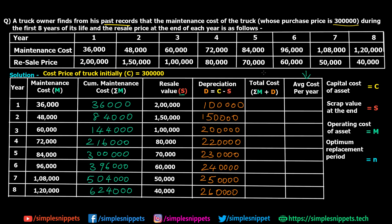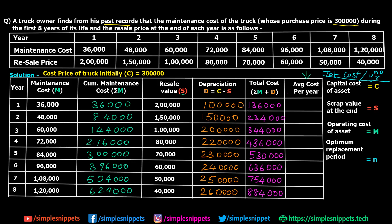Now we find the total cost the truck owner bears each year, which is cumulative maintenance cost plus depreciation. For year 1: 36,000 plus 1 lakh equals 1,36,000. For year 2 the total is 2,34,000. Then for average cost per year, divide total cost by the number of years. Year 1: 1,36,000 ÷ 1 = 1,36,000. Year 2: 2,34,000 ÷ 2 = 1,17,000. Year 3: 3,44,000 ÷ 3 = 1,14,000, and so forth.